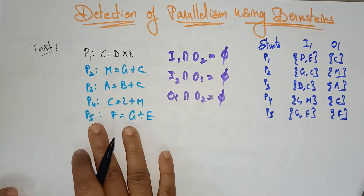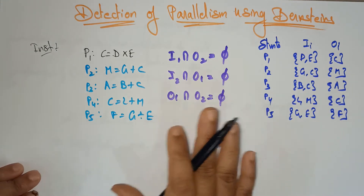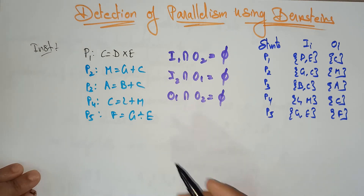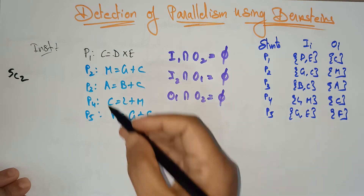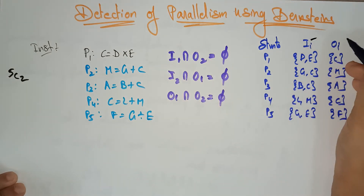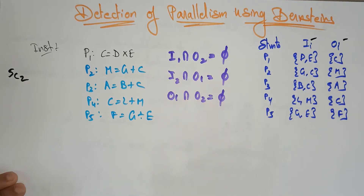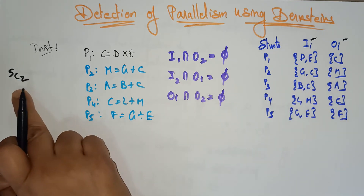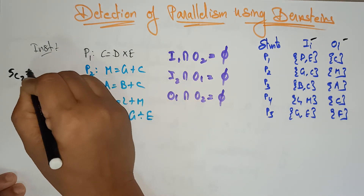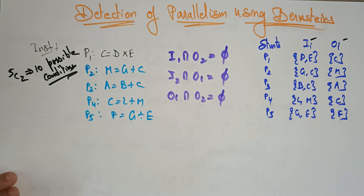I will work through only 2 to 3 process pairs and the remaining you need to work out yourselves, because it is a very big question. Try to understand the concept. If you have any doubt please comment below. Total how many possible conditions need to be checked? 5C2, because there are 5 processes and we are checking 2 at a time — so 10 possible conditions need to be checked.